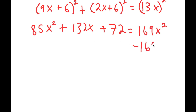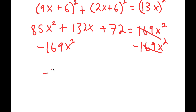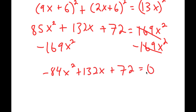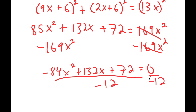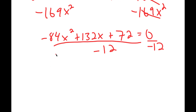Now I'm going to subtract 169x² from both sides, giving me negative 84x² plus 132x plus 72 equals 0. Dividing both sides by negative 12, I get 7x² minus 11x minus 6 equals 0.